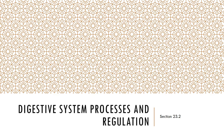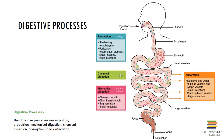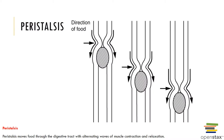Now let's look at some digestive system processes and regulation. The digestive processes are ingestion, propulsion, mechanical digestion, chemical digestion, absorption, and defecation. Peristalsis moves food through the digestive tract with alternating waves of smooth muscle contraction and relaxation, allowing for one-way movement of food through the alimentary canal.